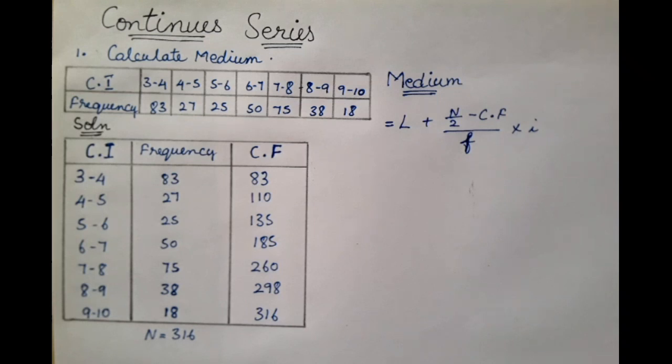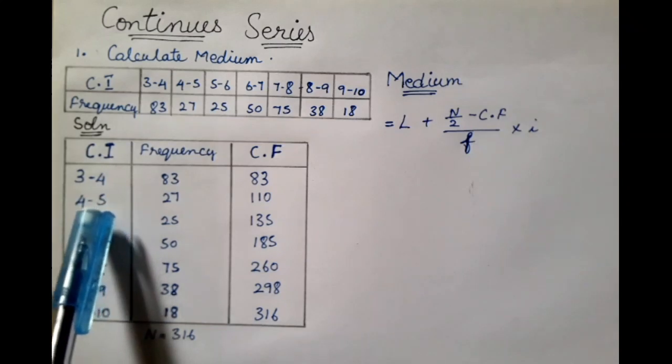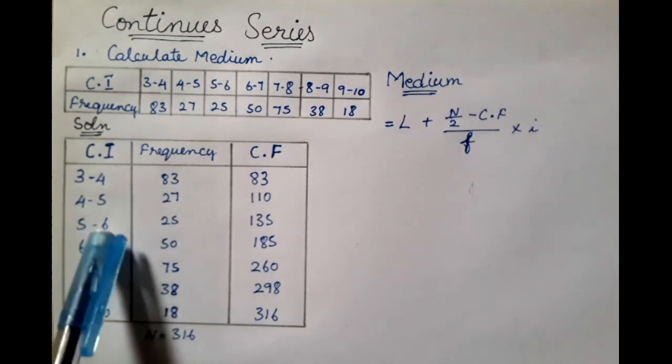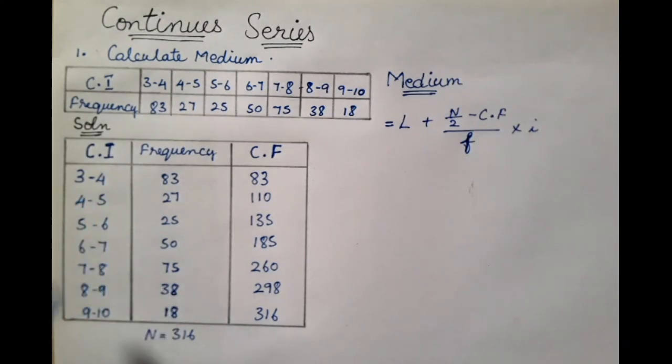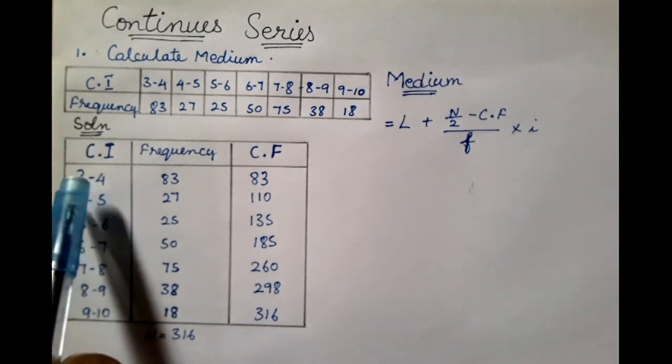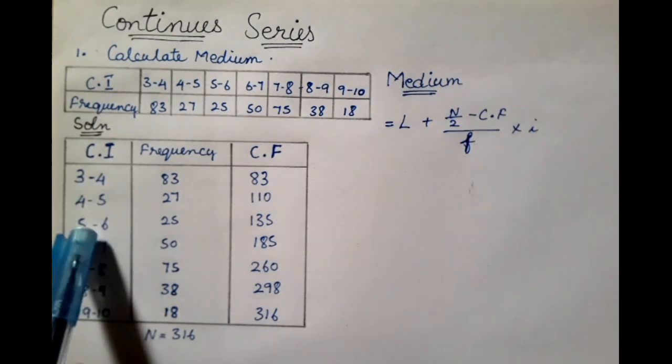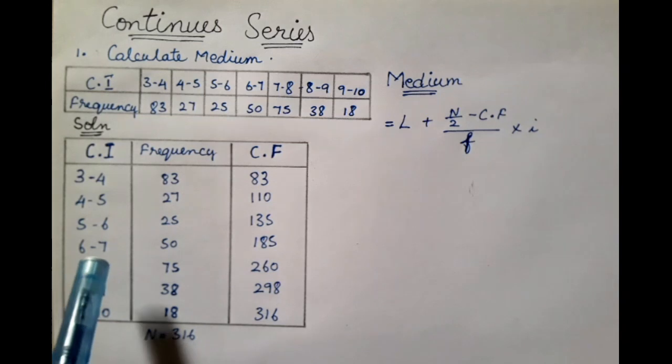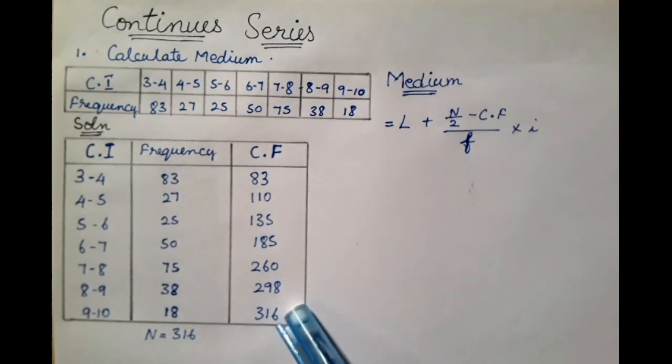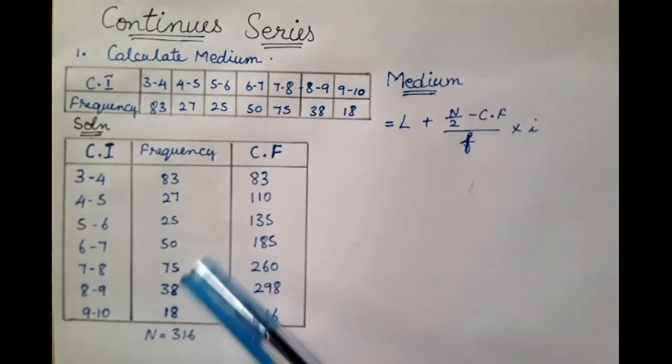Now, L is the lower class interval. This class interval is 3 to 4, 4 to 5, 5 to 6. Let's see what is lower. For example, 3 to 4, 3 is lower. 5 to 6, 5 is lower. This is L. And N is the total, N is 316. And CF is the cumulative frequency column. And F is the frequency.